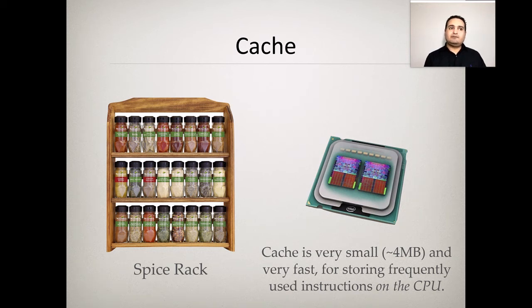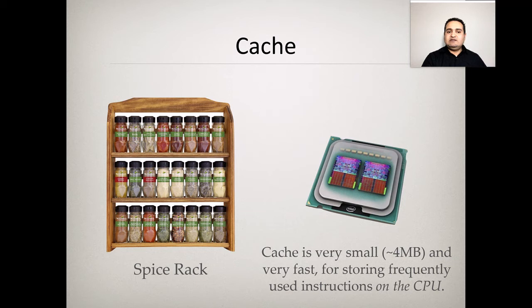Primary storage is temporary storage. Cache and RAM are examples of temporary storage for instructions. Think of it like a kitchen where spices are kept in a handy place so the chef can grab them quickly — that is cache. You can fetch data or instructions really quickly and put them back right away. Secondary storage, by contrast, requires going to a warehouse to retrieve ingredients from the storage room — in computer terms, that is the hard disk.